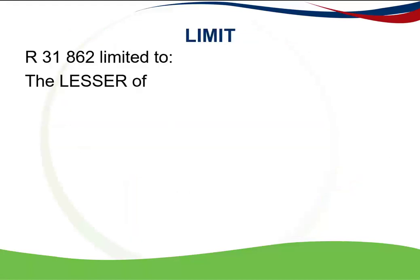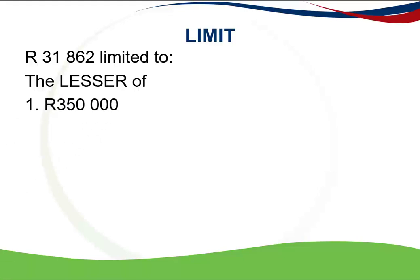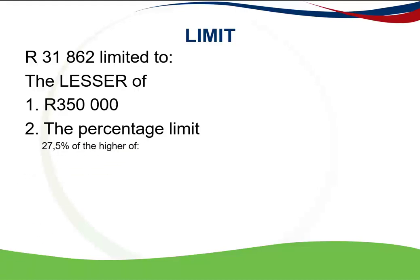Let's look at how the limit applies. We have total contributions of R31,862, and this is limited to the lesser of three amounts. The first amount is R350,000, as given in the act. The second limitation is the percentage limit — 27.5% of the higher of remuneration or taxable income.